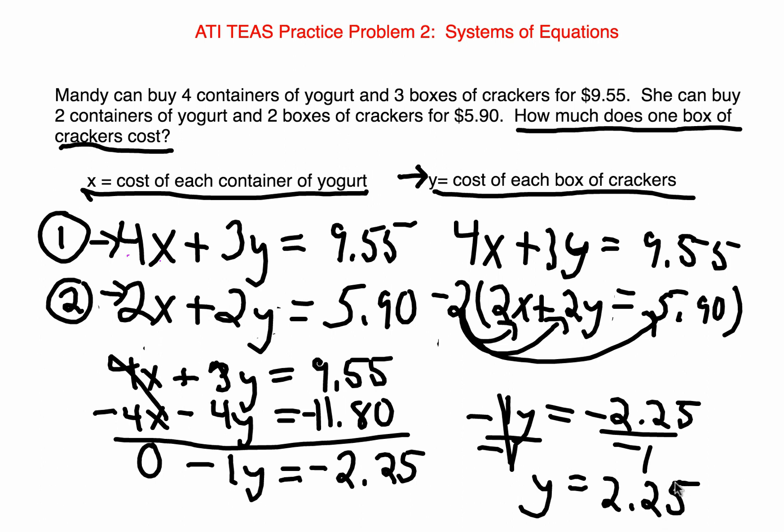Now, remember, we are dealing with costs here. So, this final answer I got will be in terms of dollars. So, we have successfully solved for the cost of each box of crackers, which is $2.25.